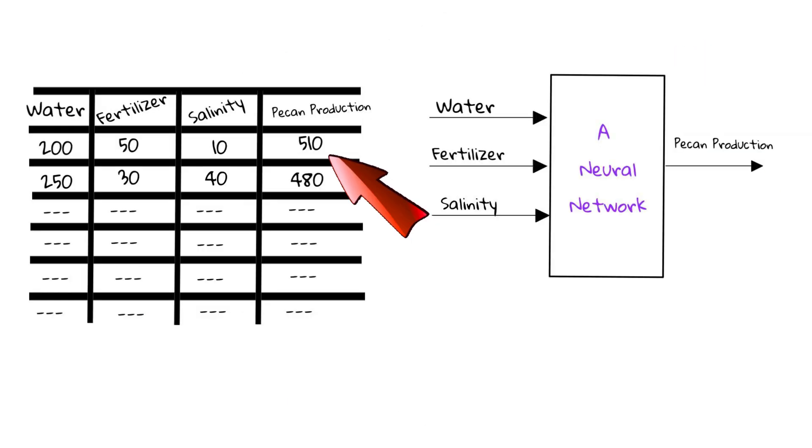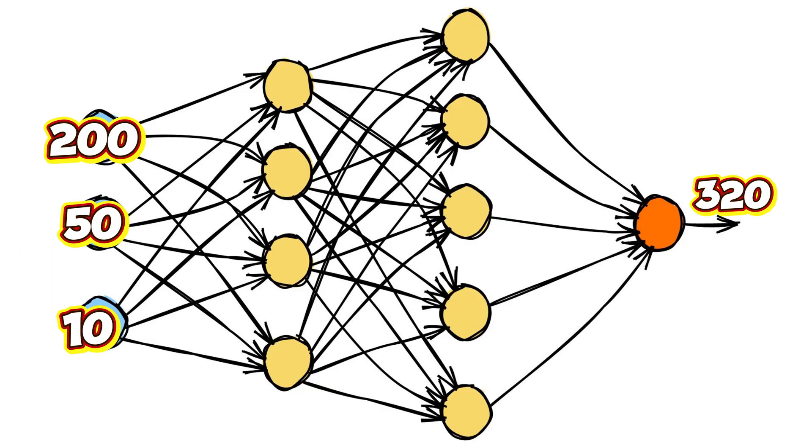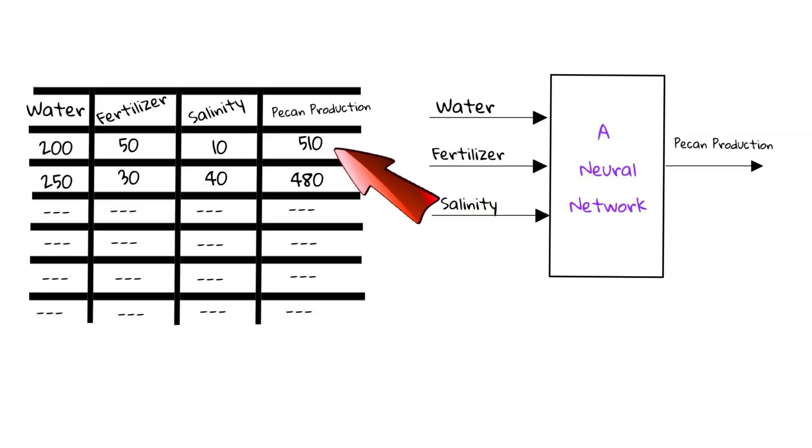The difference between the actual pecan production that the data has for this associated input and the calculated pecan production for the given input is called an error.